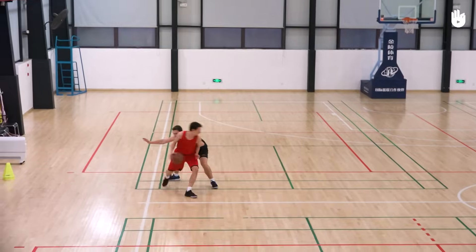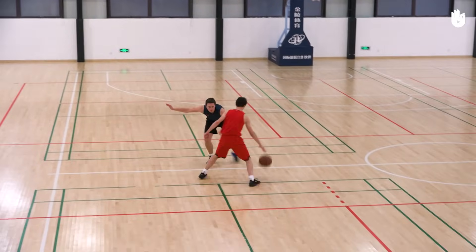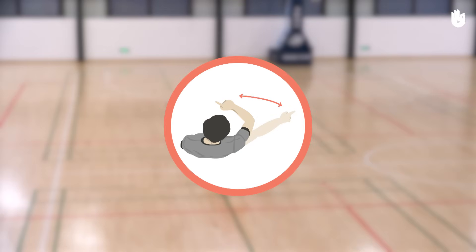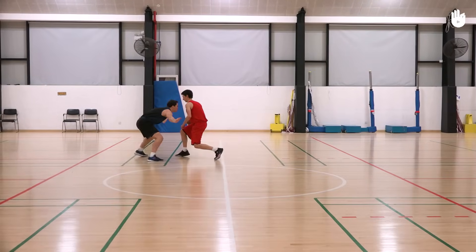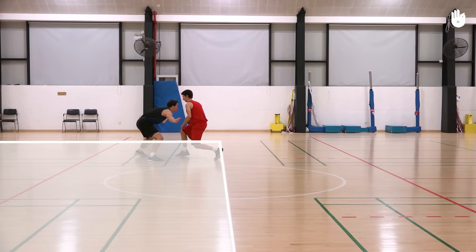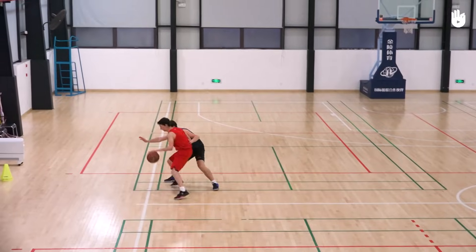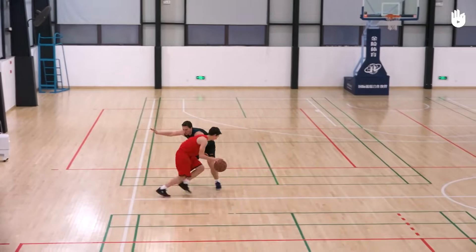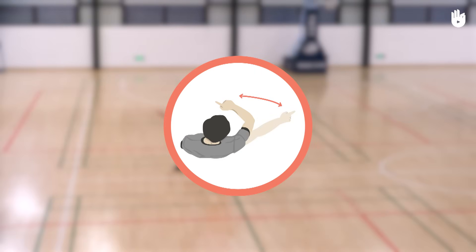The fourth type of violation is the over and back. In offense, a team in possession of the ball in their opponent's half court cannot retreat back into their own half. Otherwise, an over and back is called.